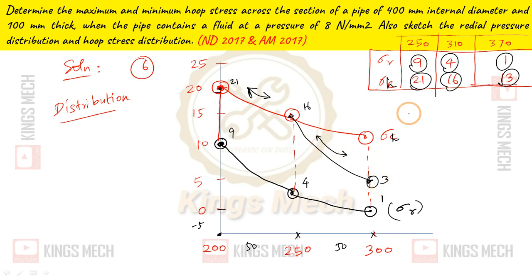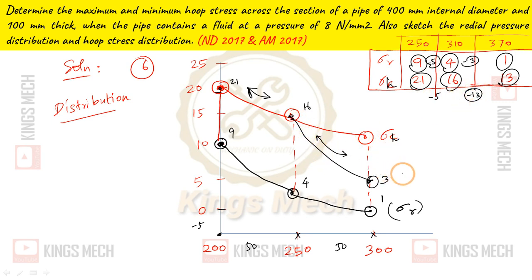In the graph, the distribution is very steep. The hoop stress support across the metal goes from a maximum of 21 at the inner surface to 13 at the outer surface. The radial stress ranges from minus 8 at inner to 0 at outer. You can see the deviation is high at the inner radius. We can plot this distribution accordingly.